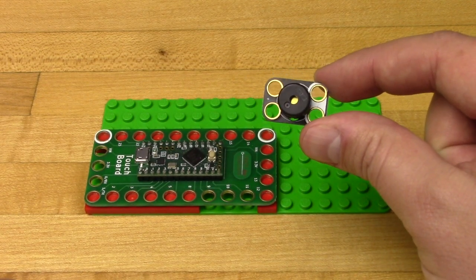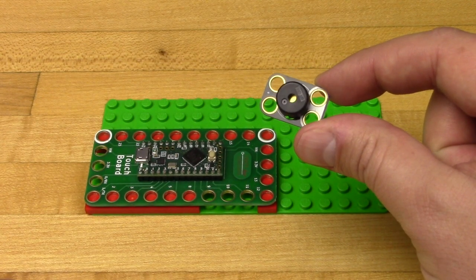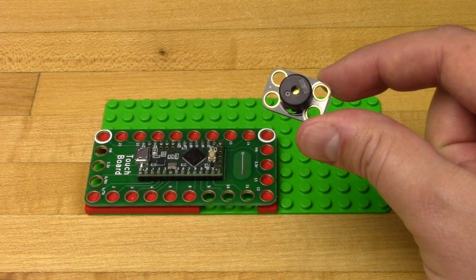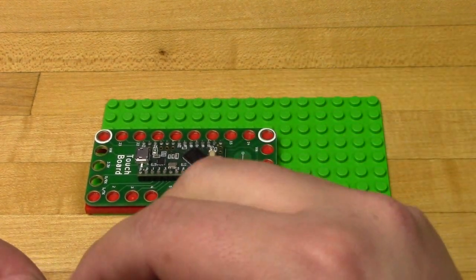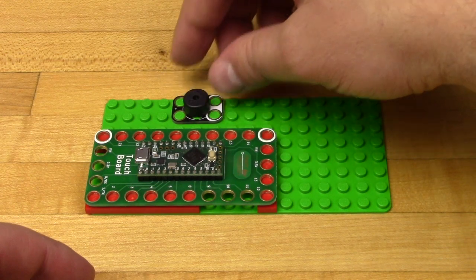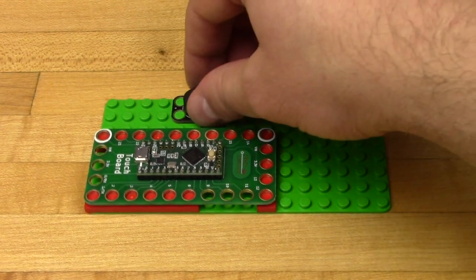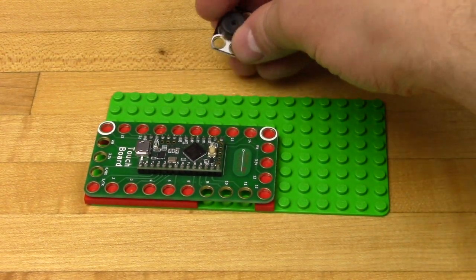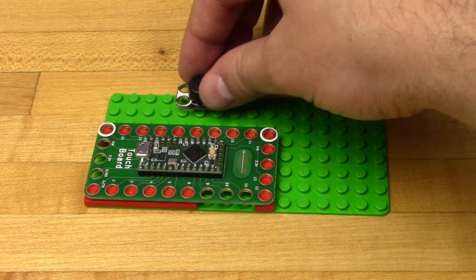The first part we'll be attaching is our piezo speaker. We have to go from pin 16 on our touch board to the piezo speaker and then from ground on the other side to the piezo speaker. The best way to handle this is just to put the piezo speaker down near pin 16 and then run conductive tape.